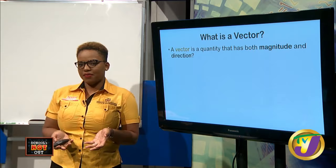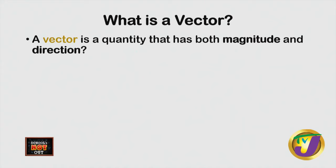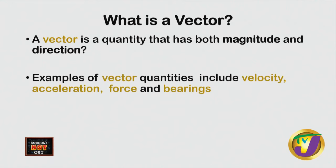What is a vector, Karima? The answer is right up on screen — a vector is a quantity that has both magnitude and direction. For it to be a vector it must have both magnitude and direction. Examples of vector quantities include velocity, acceleration, force, and bearings.